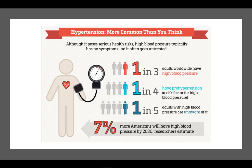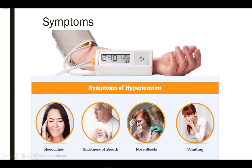Hypertension is a very common problem. One in three American adults has hypertension, and only one in five of those know they have it. It is estimated that 9.4 million deaths worldwide are associated with hypertension-related complications each year. The only way to know if you have high blood pressure is to check your blood pressure. Hypertension is often called the silent killer since many people have no symptoms. High blood pressure can quietly damage your body for years before symptoms develop.